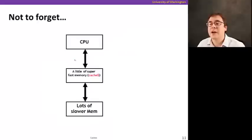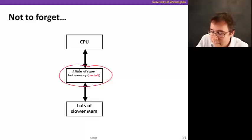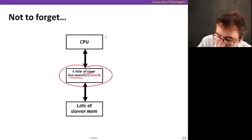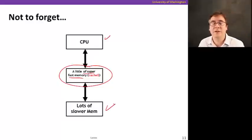One thing I don't want you to forget from this first video on caches is that a cache is this little bit of very fast memory in between CPU and lots of slower memory. We can give the CPU the illusion that memory is faster by putting a little bit of storage closer to it. See you soon.